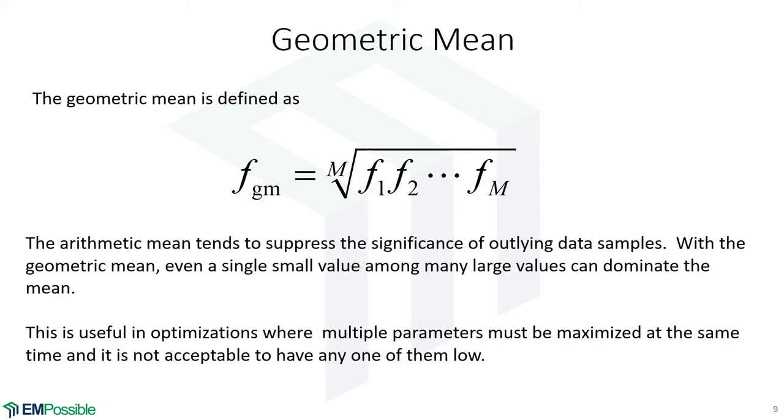There's another type of mean called the geometric mean. Rather than add up all our samples and divide by the number, we multiply all our samples. And if that's m number of those, we take the mth root.